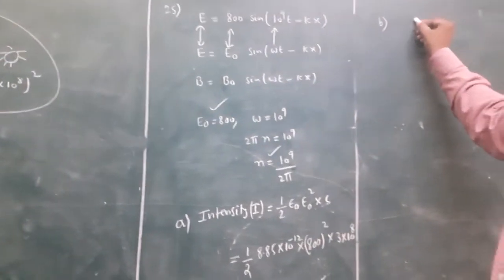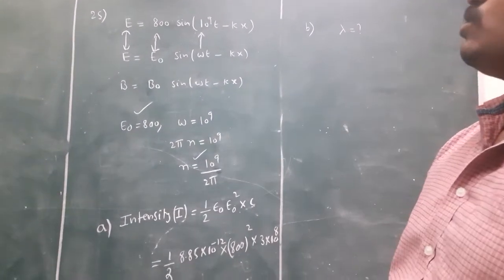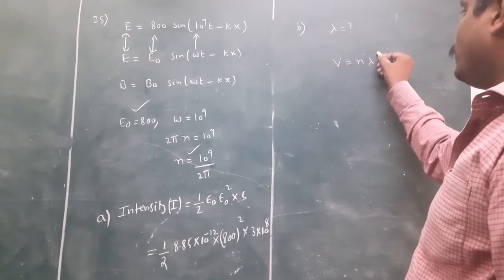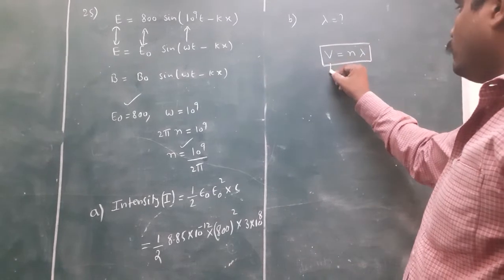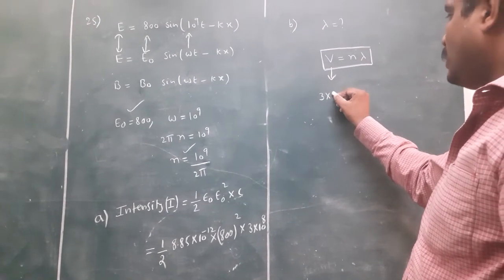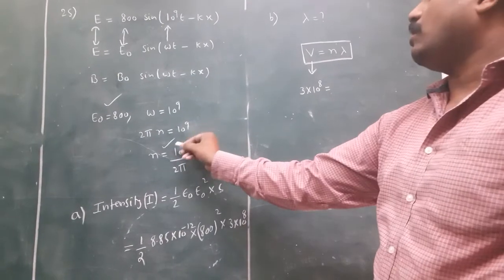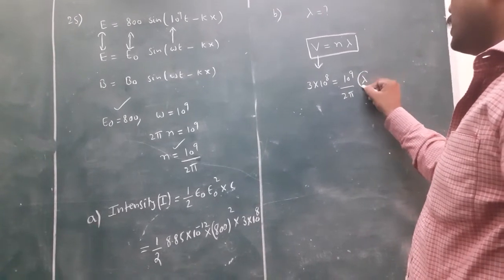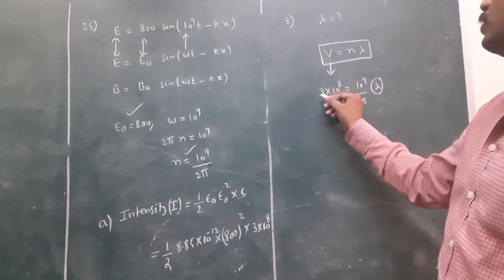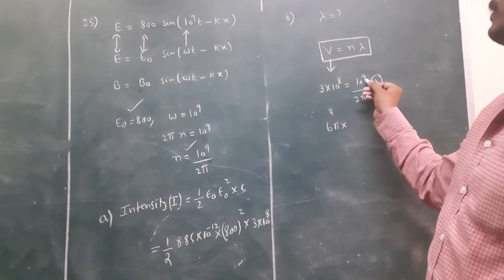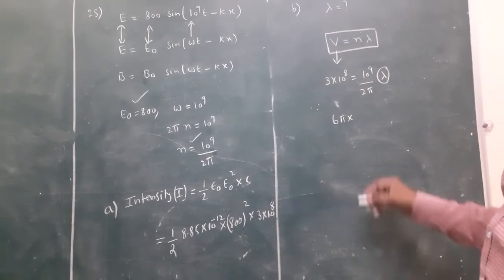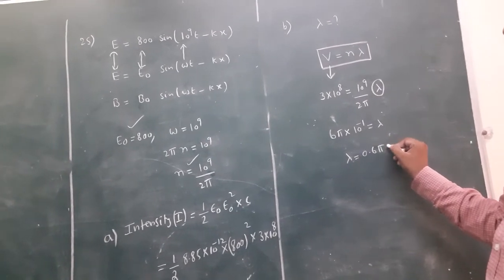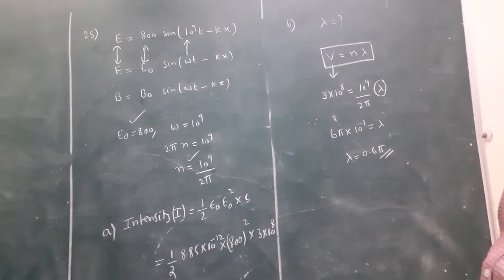The second part is to find the wavelength. The velocity of a wave is v = nλ. Velocity of light is 3 × 10⁸. Frequency is 10⁹ / 2π. Therefore lambda = 2π × 3 × 10⁻¹ = 6π × 10⁻¹. So lambda equals 0.6π meters.